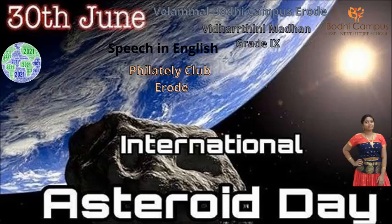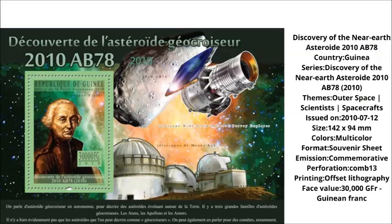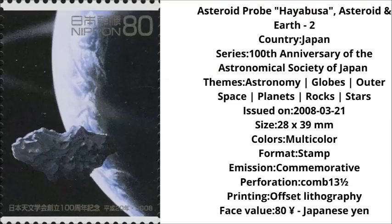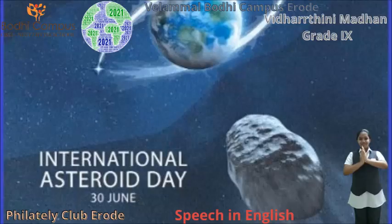So, what is this World Asteroid Day? Before going on to it, what does asteroid mean? An asteroid is a large, irregularly shaped object in space which orbits our sun. That is known as an asteroid.